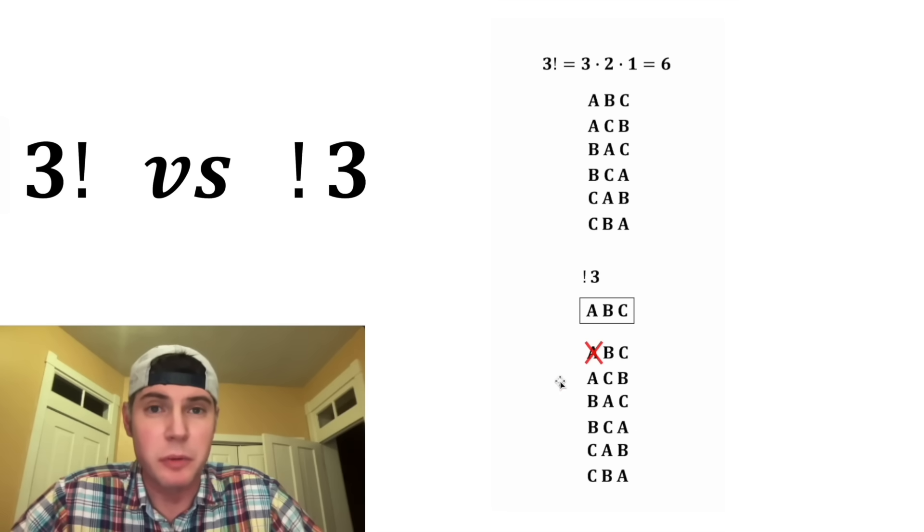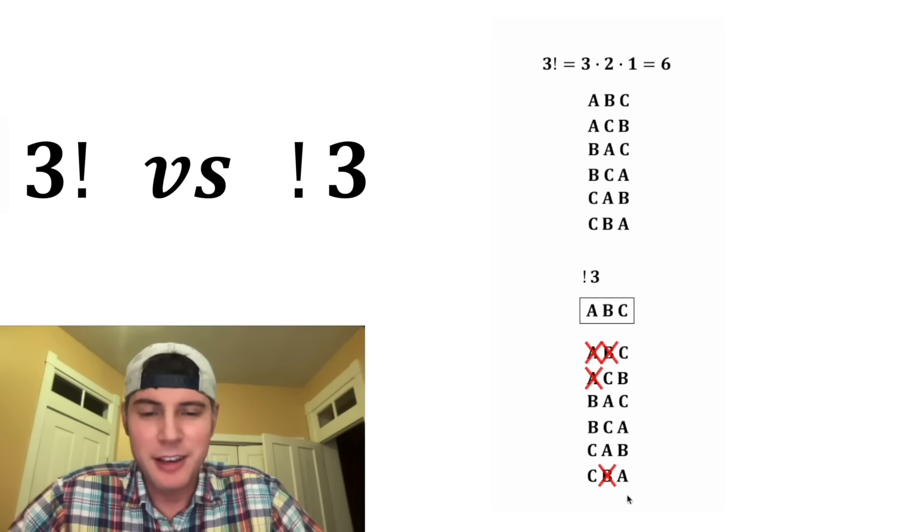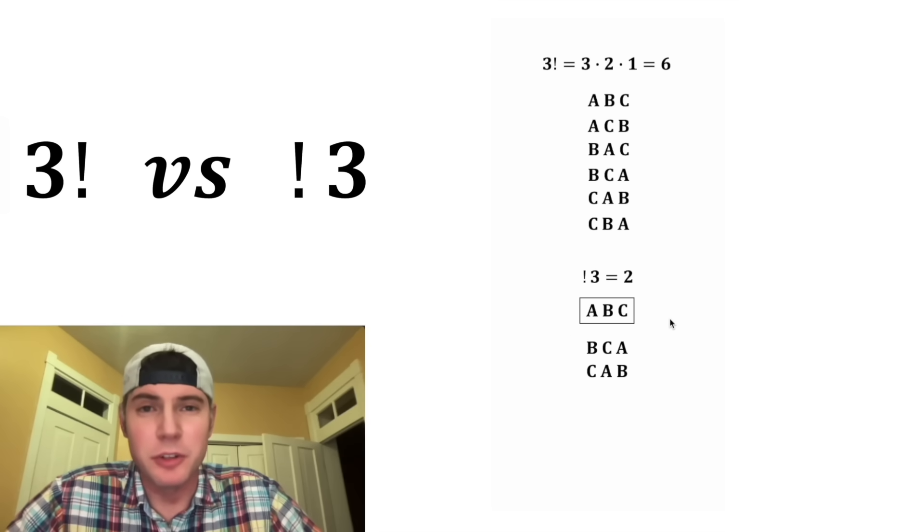So this A in the first place, we want to exclude that. And this A here, we also want to exclude that. And then the B here in the second spot, we want to exclude that. And we want to exclude this B right here. And then this C, we want to exclude that. And we also want to exclude this C right here. So these 4 permutations do not count for the subfactorial. So subfactorial 3 is equal to 2.